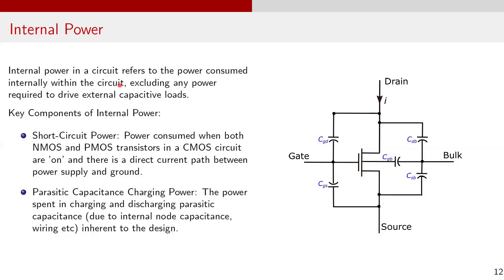So far, we have discussed some of the most significant sources of power dissipation in CMOS circuits. Now let's touch on another important term: internal power. Internal power in a circuit refers to the power consumed internally within the circuit, excluding any power required to drive external capacitive loads. It is an essential component of the total power dissipation and is commonly characterized as part of standard cells, which are the fundamental building blocks of IC designs. There are two key components of internal power.